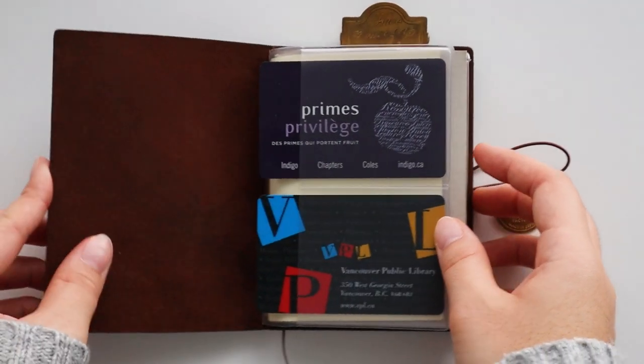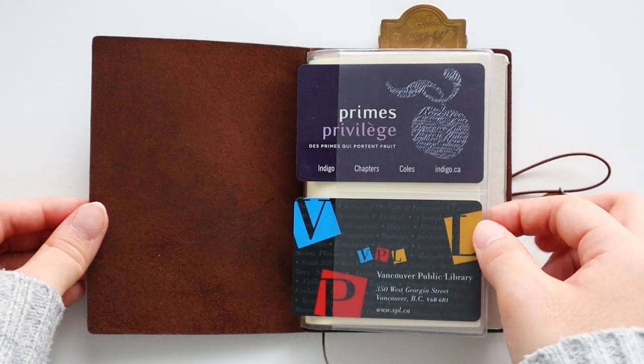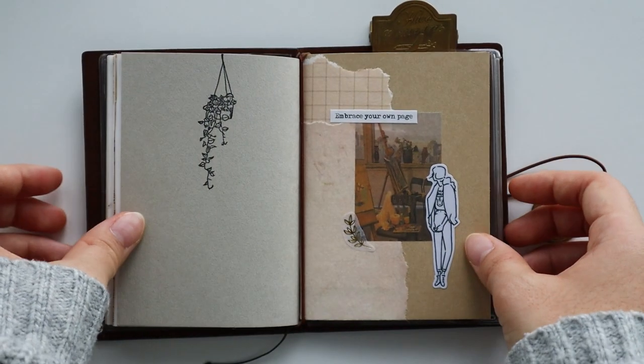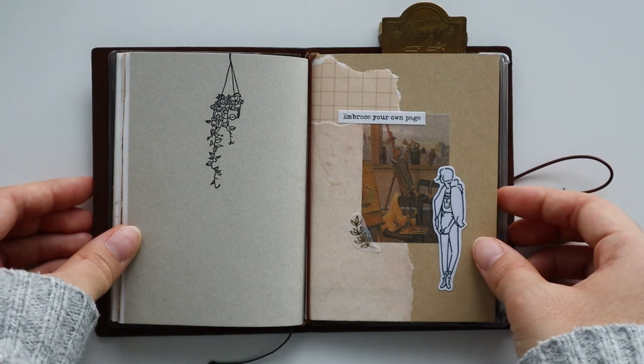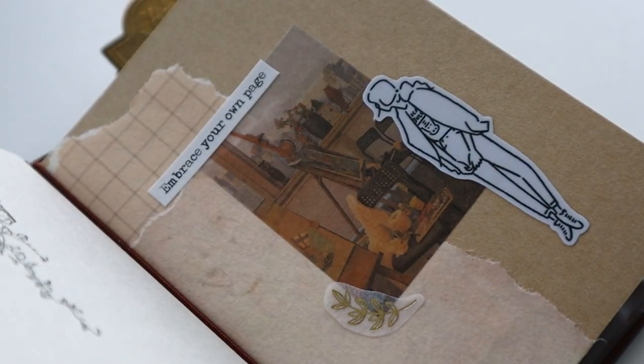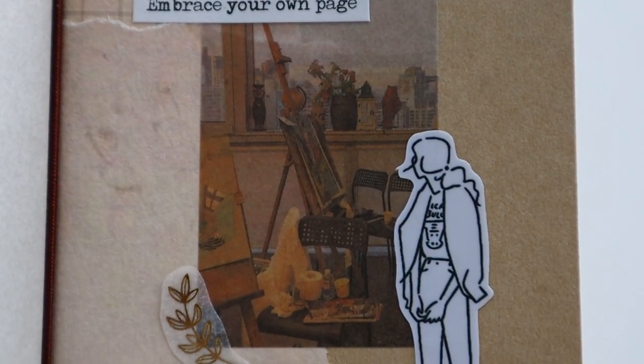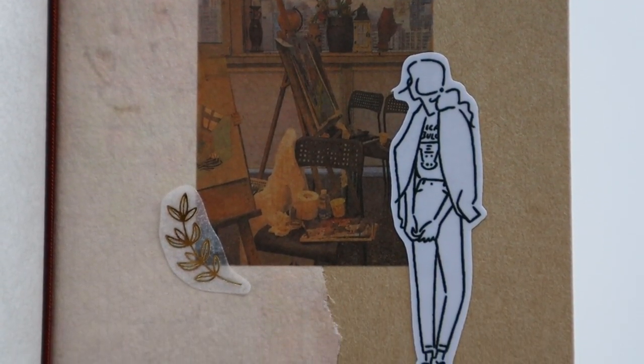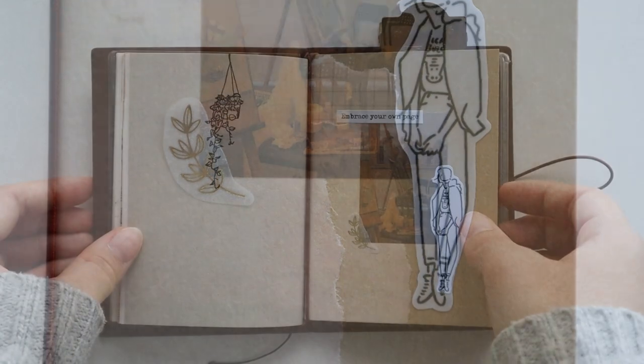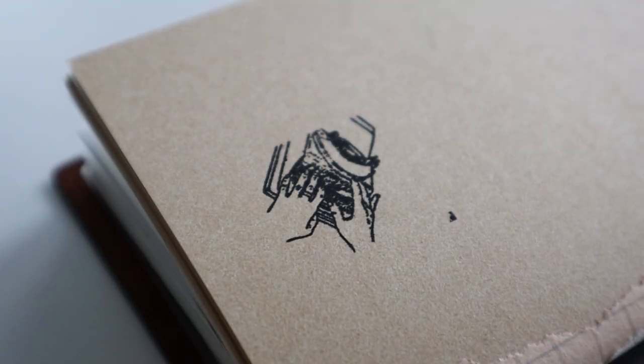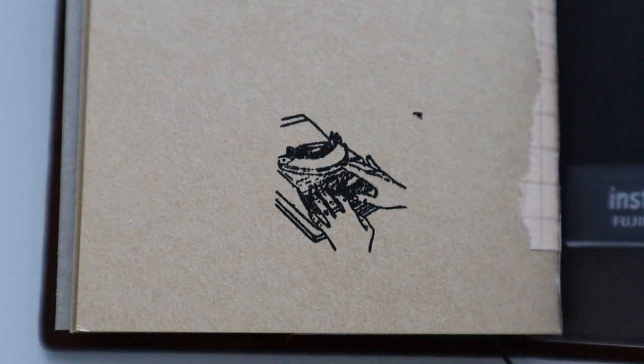And that's it! I am really excited to start using my new brown passport notebook and to see how the leather ages. I'm excited to see if it'll get soft and more bendable as I keep using it and it keeps touching my hands. And I'm also really happy with how the cover of my craft paper notebook turned out. I already feel really inspired to start scrapbooking in there.